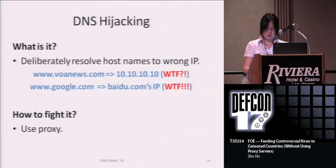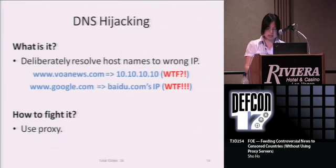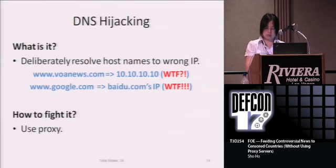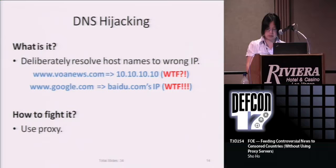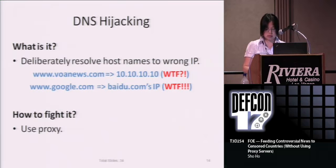A few years ago, the Chinese government created something to confuse their Internet users. They hijacked DNS requests and resolved certain host names to wrong IP addresses. In one incident, they redirected all Google users to Baidu.com. For those who don't know what Baidu is, it's China's biggest search engine. To fight DNS hijacking, we can tell users to use proxy servers.